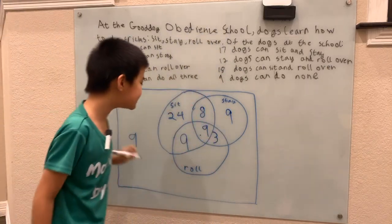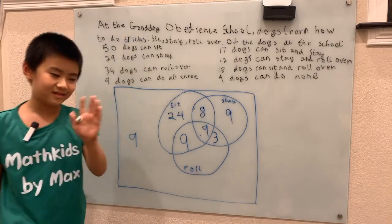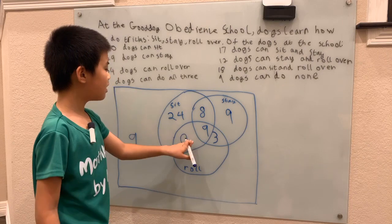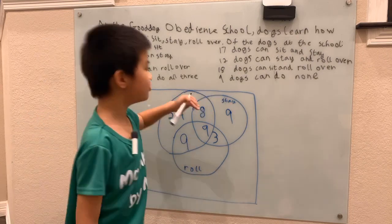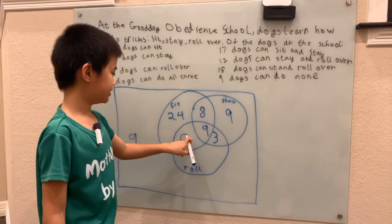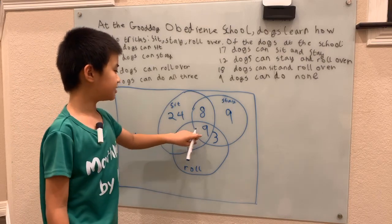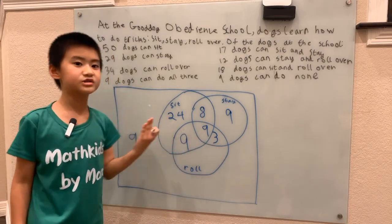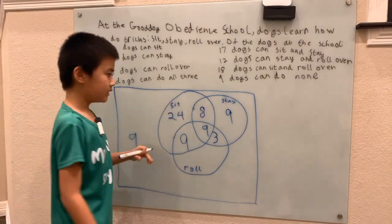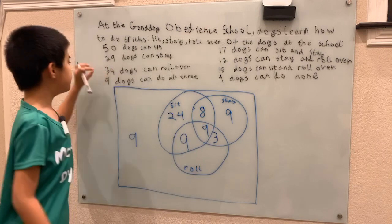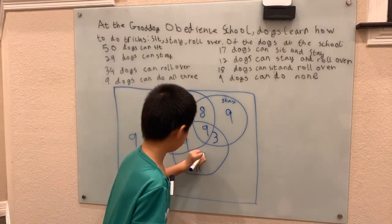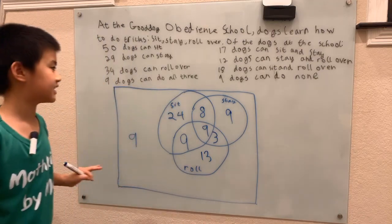It's not a coincidence that there are four 9s in this diagram. For roll over: there are 34 dogs that can roll over, and of those, 9 plus 9 is 18, plus 3 is 21 already accounted for. So 34 minus 21 gives us 13 more dogs that can only roll over.